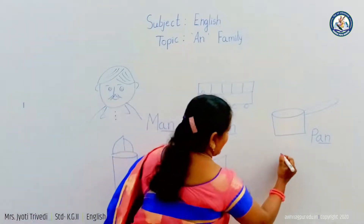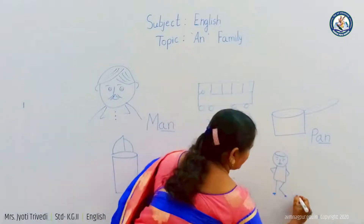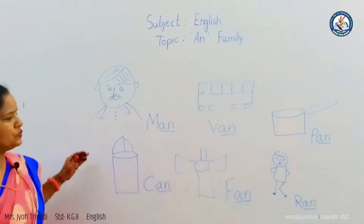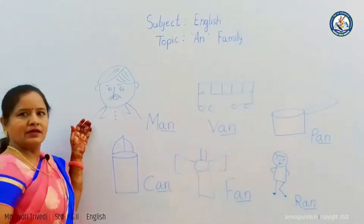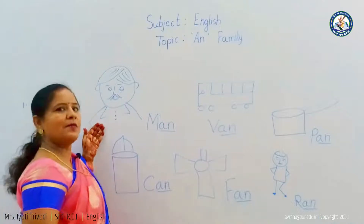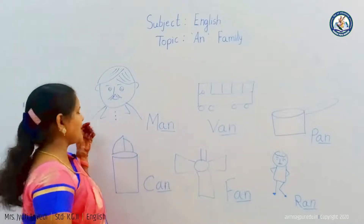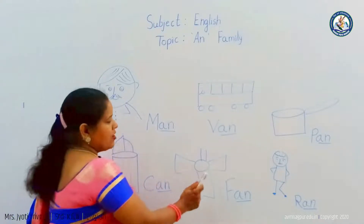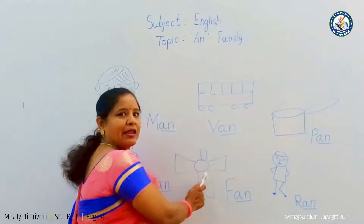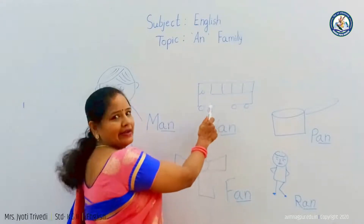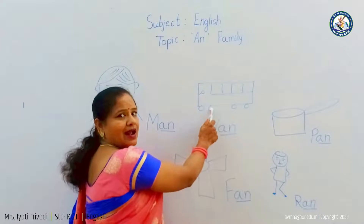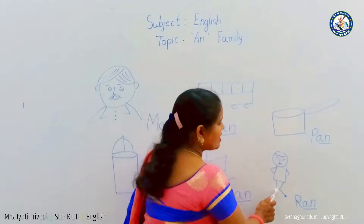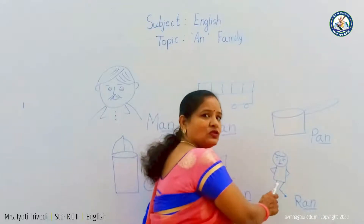And this is ran — R-AN: ran. So students, man: M-AN, man means aadmi. C-AN: can, can means dabba. F-AN: fan, fan means pankha. V-AN: van, van means gaadi. P-AN: pan, pan means kadhai. R-AN: ran, ran means dhodna.